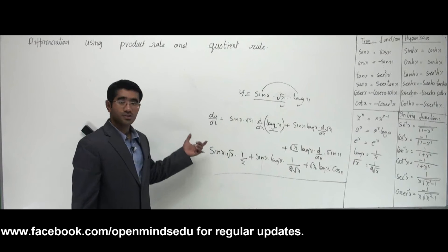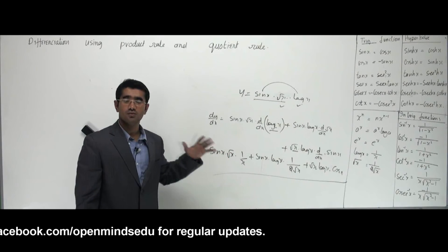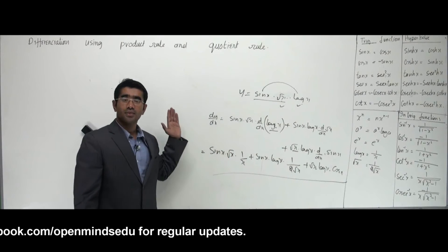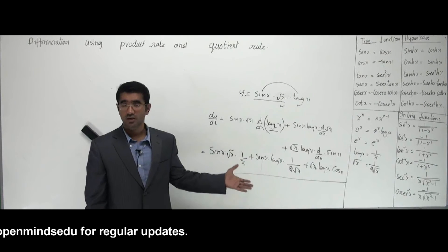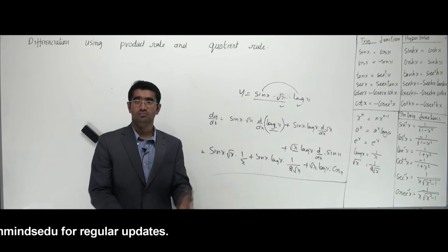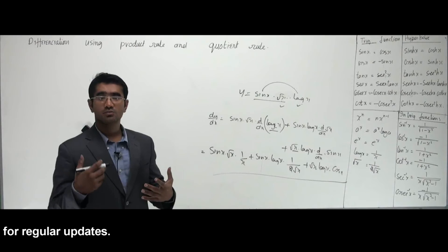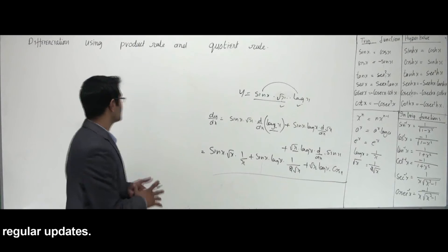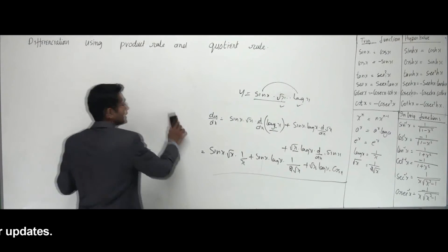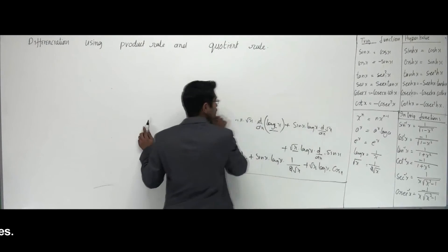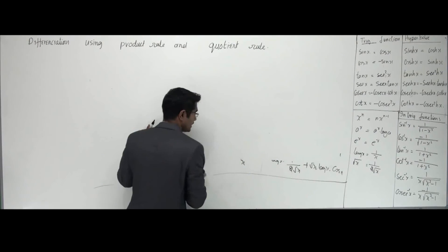Whether you have two, three, or four functions, the belting rule — or product rule — works the same way: separate them, find each one alone, and differentiate. Let's now see how we can also use the quotient rule.